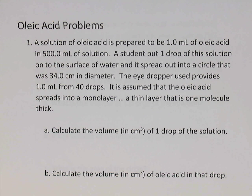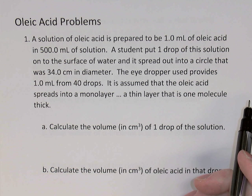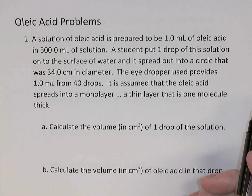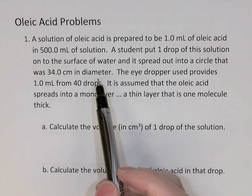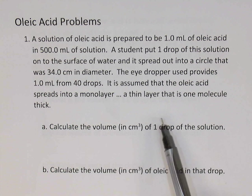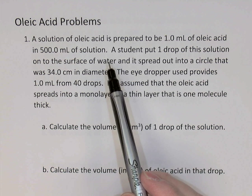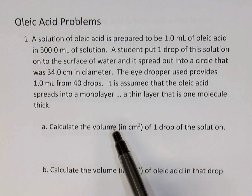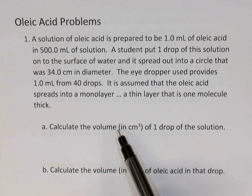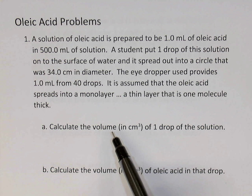In this video we're going to take a look at one of the last problems in the unit on elements and compounds for grade 9 advanced science. It's called oleic acid problems. We did an experiment very similar to what you see in this first question. We have a solution of oleic acid, which is a fatty acid, prepared to be one part oleic acid in 500 parts solution — one mil of oleic acid in 500 mils of solution.